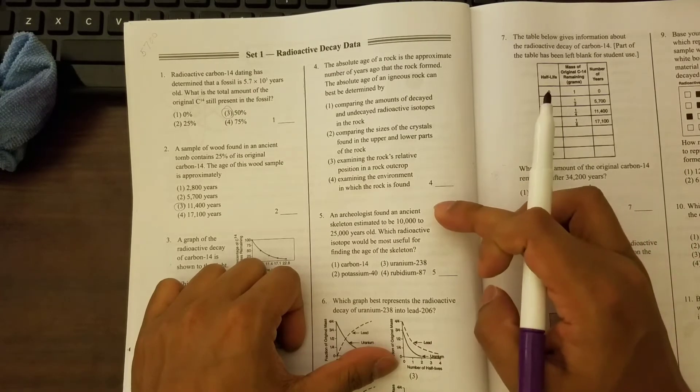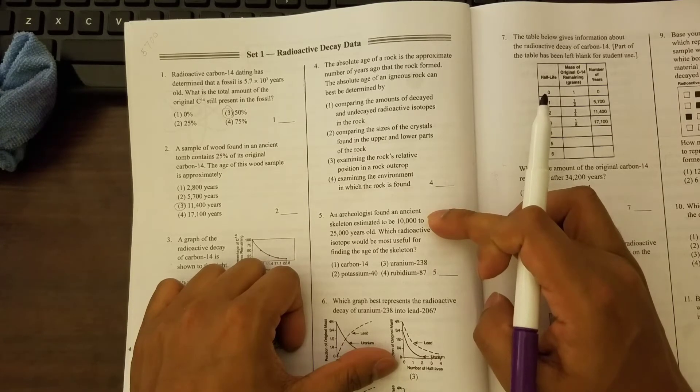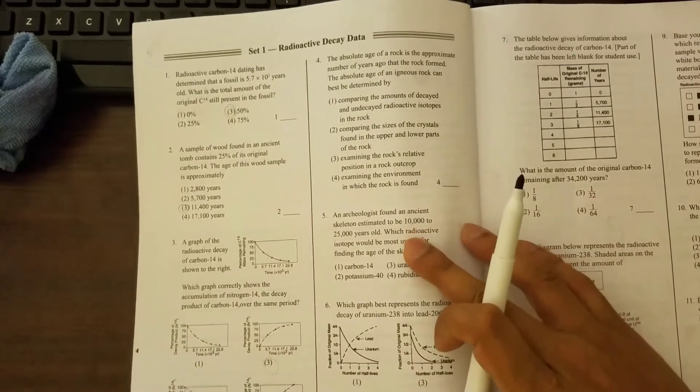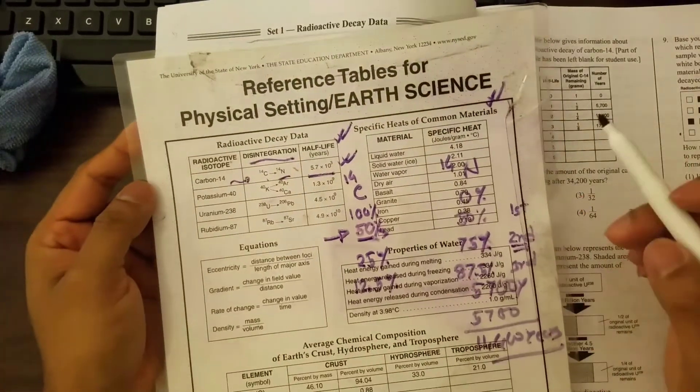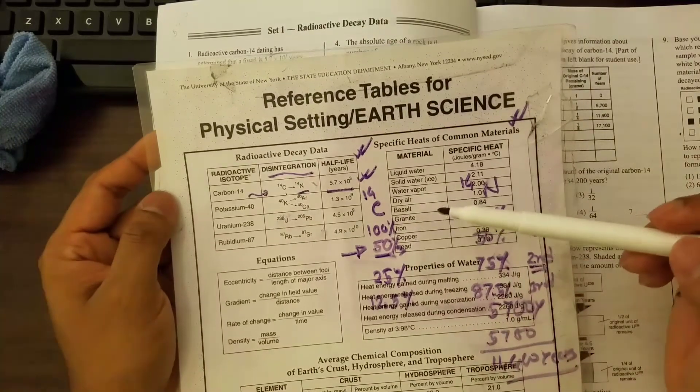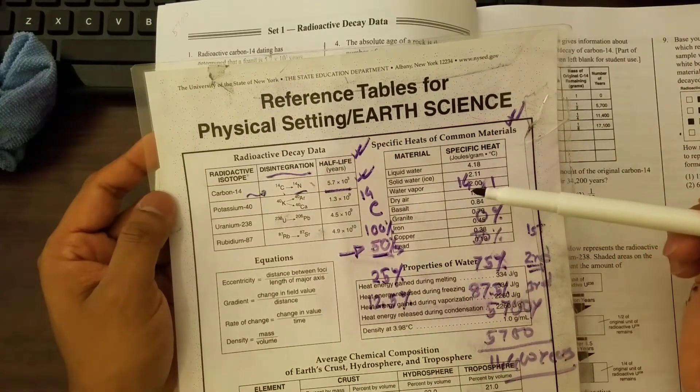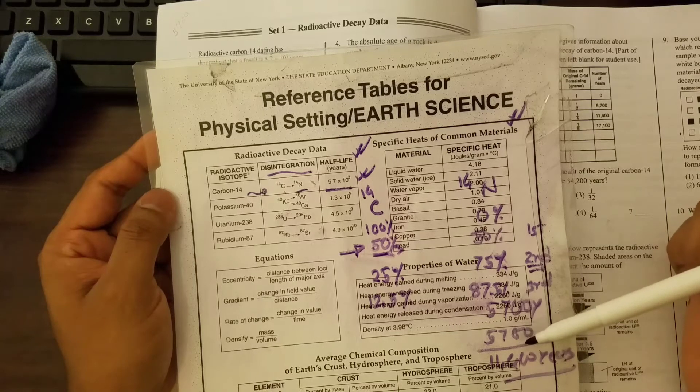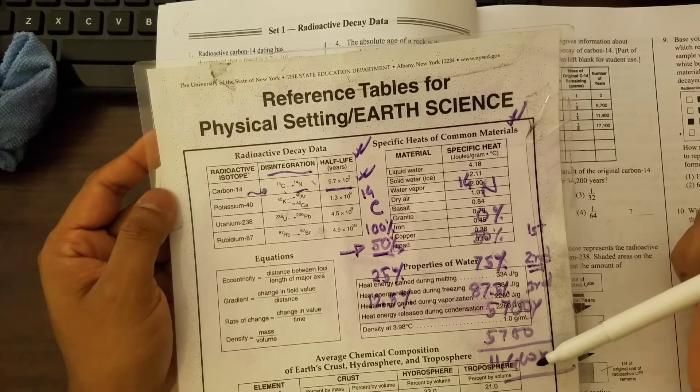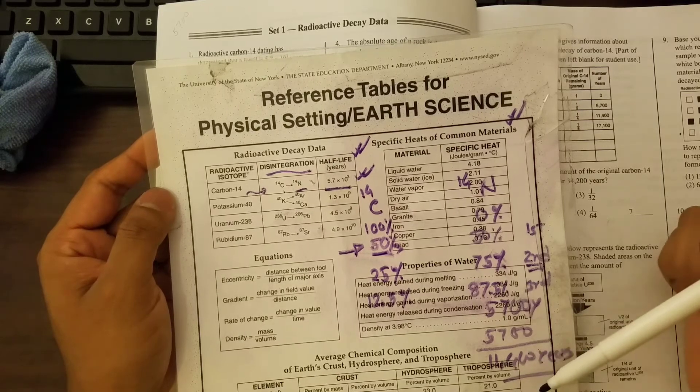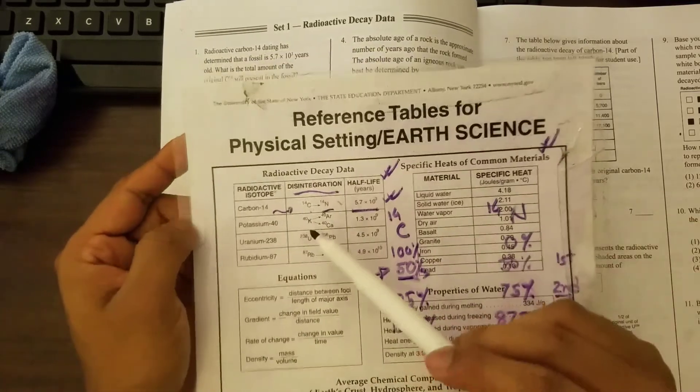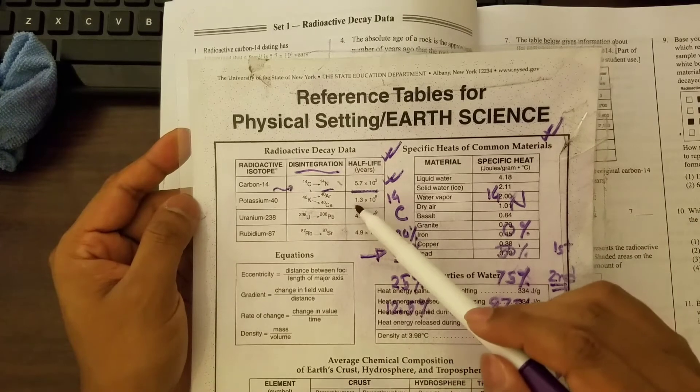You can see an archaeologist found an ancient skeleton estimated to be 10,000 to 25,000 years old. Which radioactive isotope would be most useful for finding the age of the skeleton? So if we look at the reference table, you can see carbon-14, it's good. For elements, as you can see the first half-life is 5,700, and then it will be 11,400, and then the next one will be 22,800, and so on. But if we look at potassium, it starts from a billion.